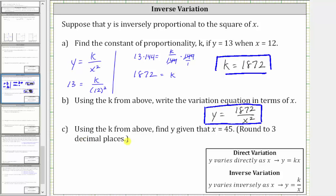And finally, for part c, using the k from above, or our inverse variation equation, find y given x is equal to 45. And we're told to round to three decimal places if needed. So to find y when x is 45, we use the inverse variation equation and substitute 45 for x.